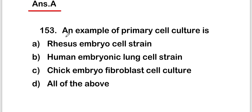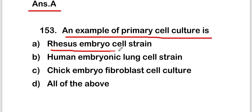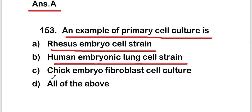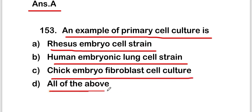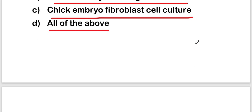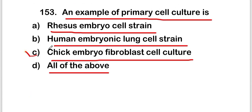The next question is: an example of primary cell culture is rhesus embryo cell strain, human embryonic lung cell strain, chick embryo fibroblast cell culture, or all of the above? The right answer is option C, that is chick embryo fibroblast cell culture.